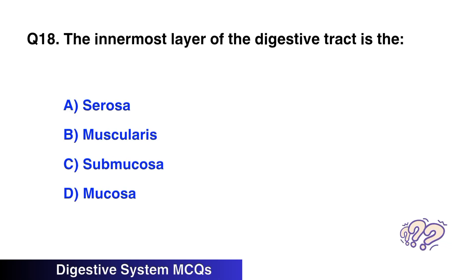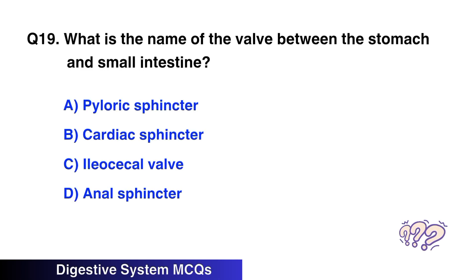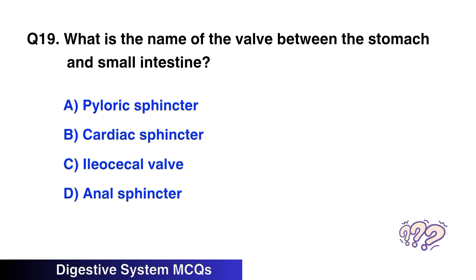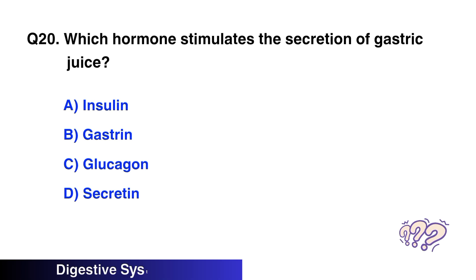Question number eighteen: The innermost layer of the digestive tract is? The right option is D, mucosa. Question number nineteen: What is the name of the valve between the stomach and small intestine? The right option is A, pyloric sphincter.